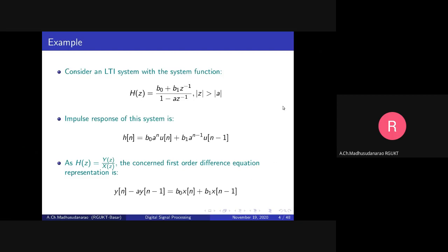Recall that the inverse z-transform of z^(-1) * X(z) is x(n-1), and the inverse z-transform of z^(-k) * X(z) is x(n-k), meaning a delay by k samples corresponds to multiplication by z^(-k). This gives us a recursive difference equation: y(n) as a function of the present input, past inputs, and past outputs.